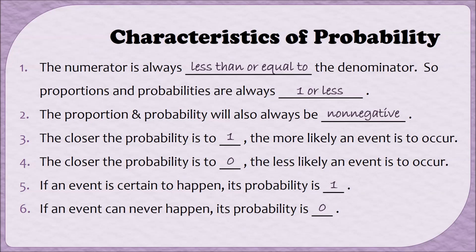If an event is certain to happen, its probability is 1. And if an event can never happen, its probability is 0. There's a slight nuance here: this is a one-directional if-then statement. If an event can never happen, we can conclude its probability is 0. But just because the probability is 0 does not mean that the event can't happen—we're going to see why and how that can happen a little bit in the future.